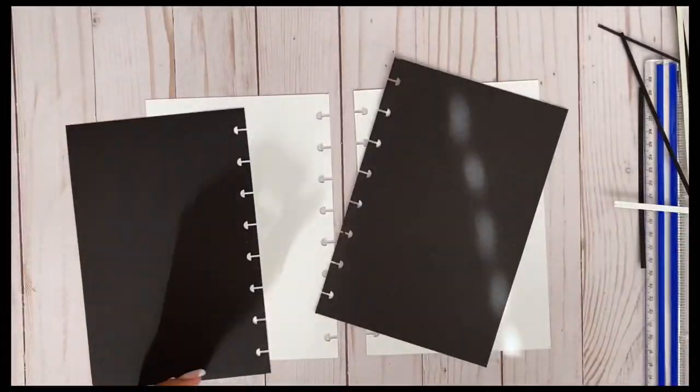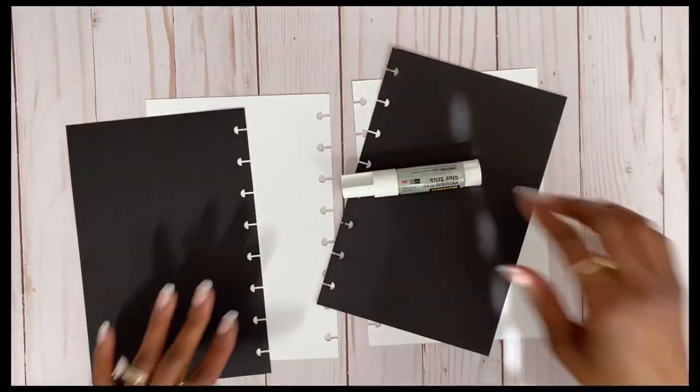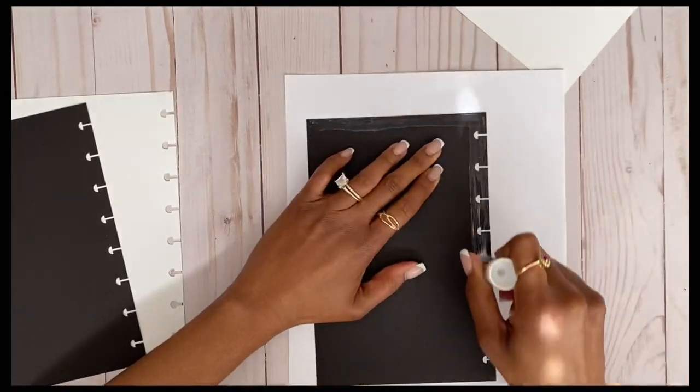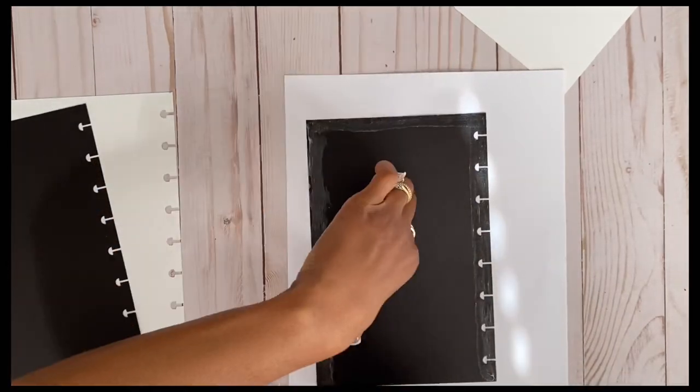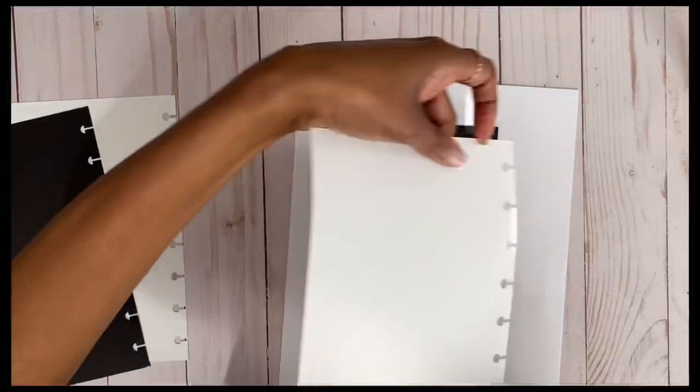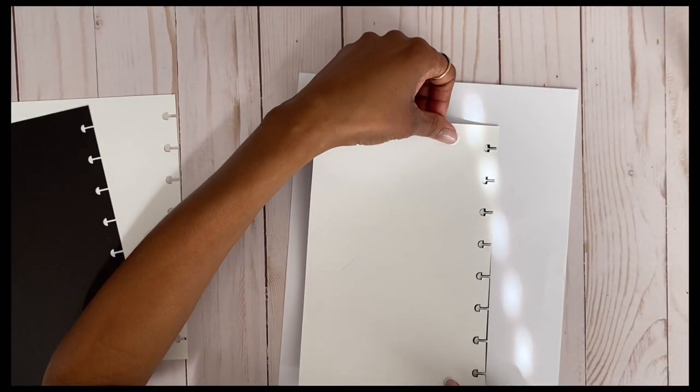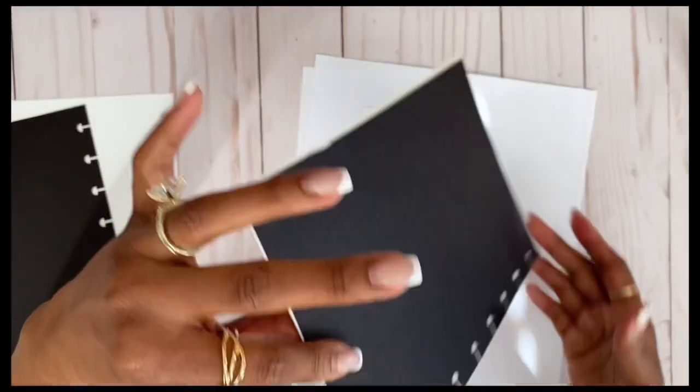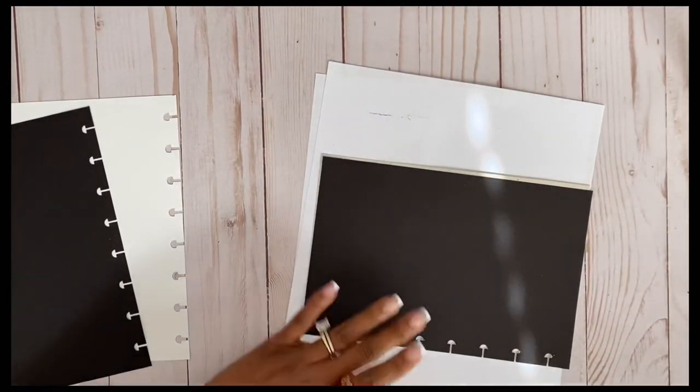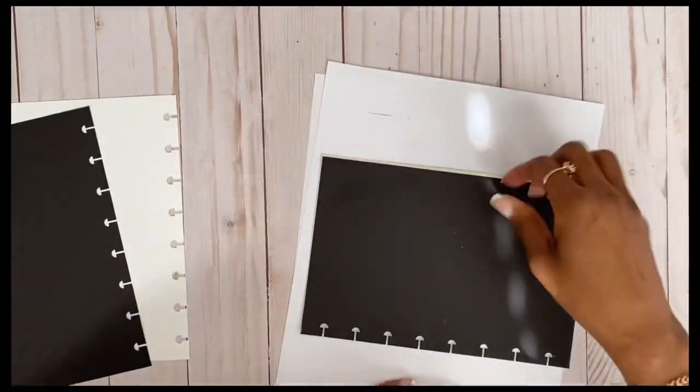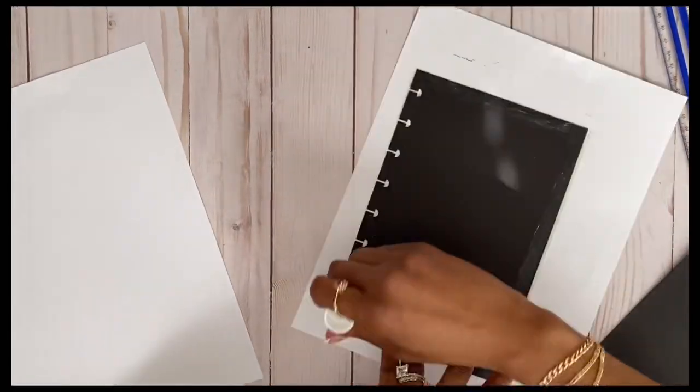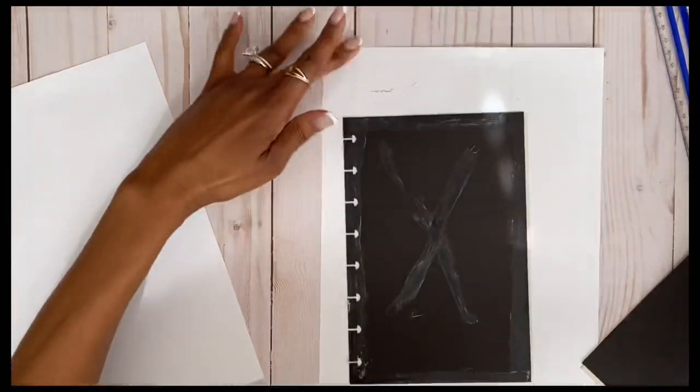I'm using my glue stick to glue all four of these pieces together. This will give the part that I'm using as an insert some structure and allow it to really go into the notebook cover. I'm using my ruler to kind of press it down and continuing to glue all of the pieces together.